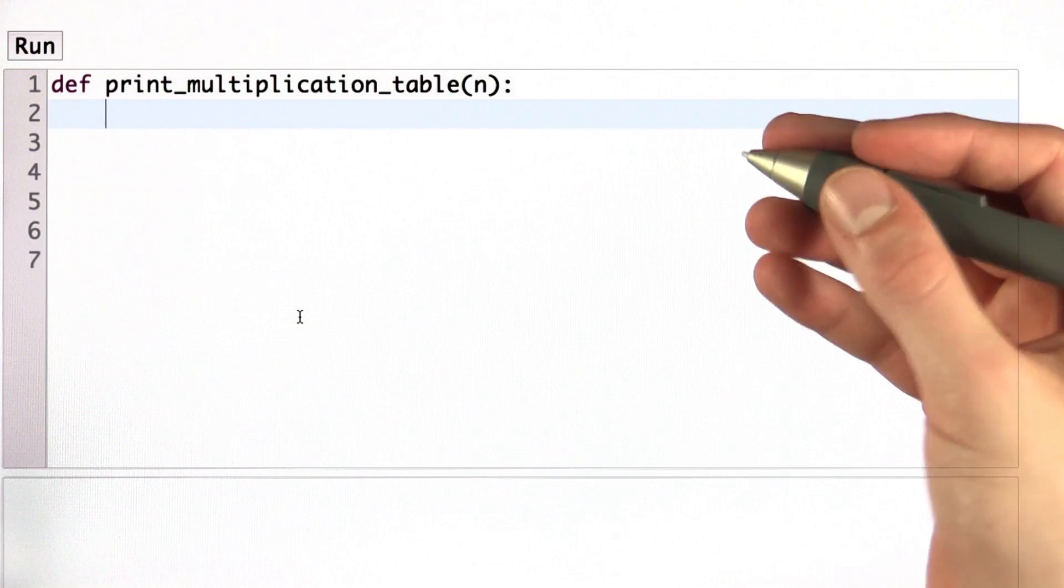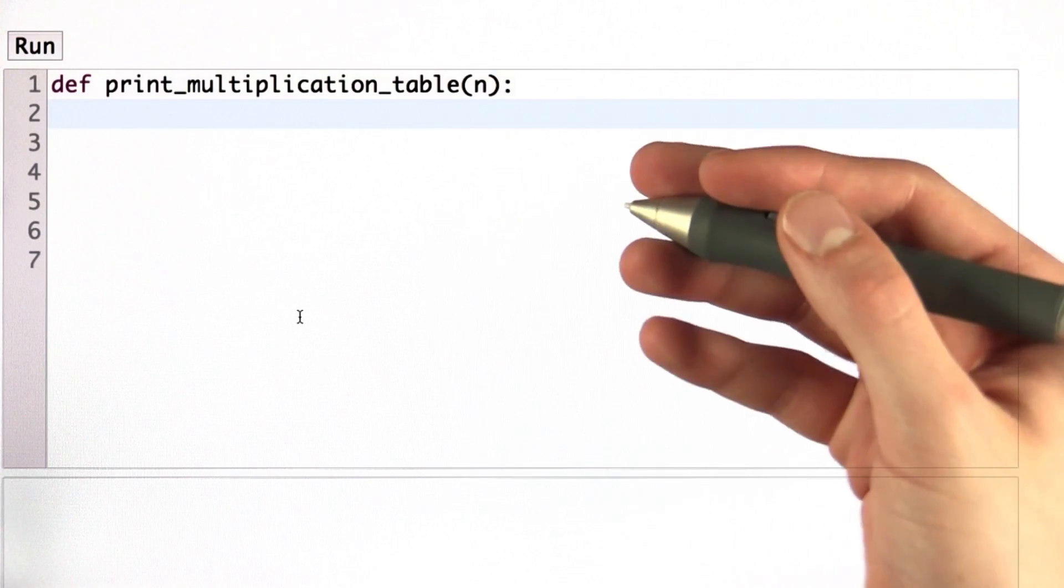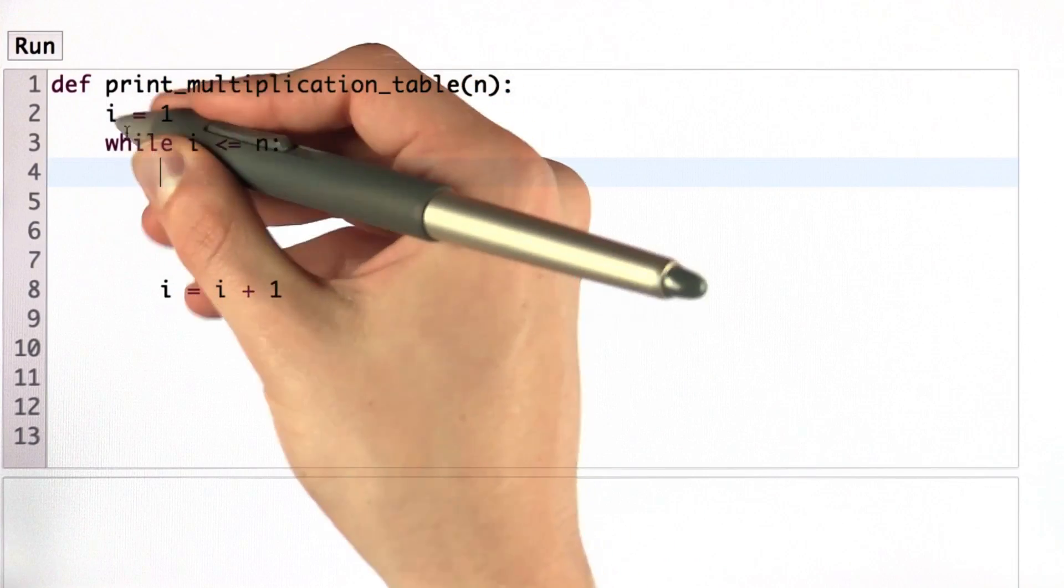If you looked at the output in the example, you notice that the first operand goes from 1 to n. Let's write the while loop that does that. Here, we call the first operand i.